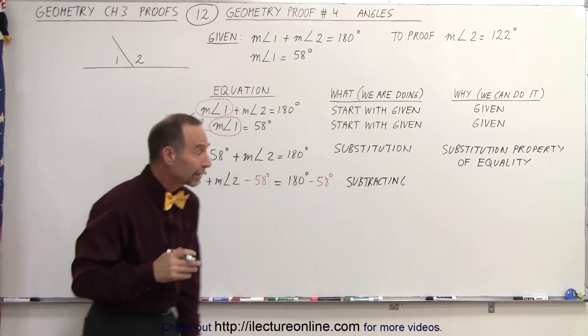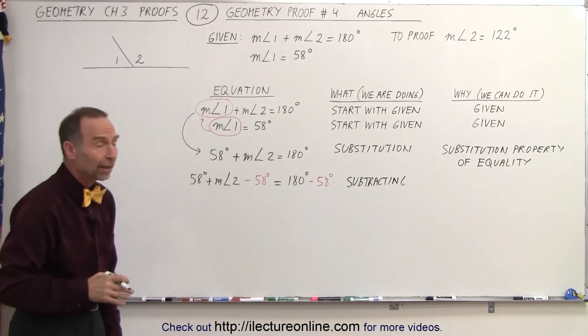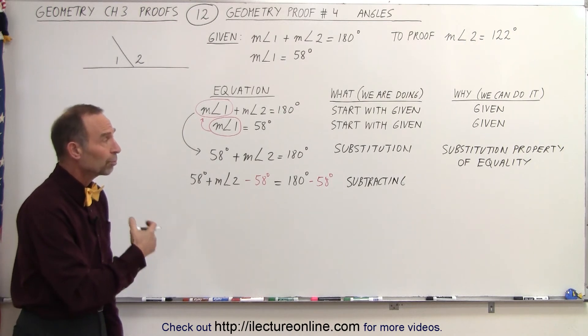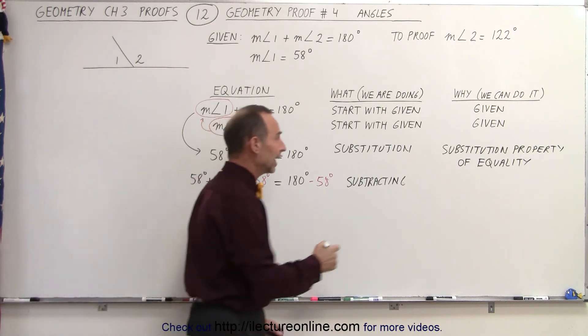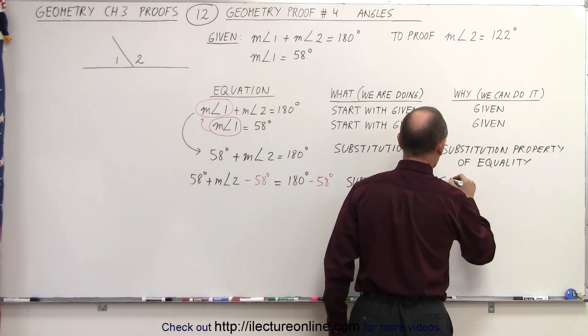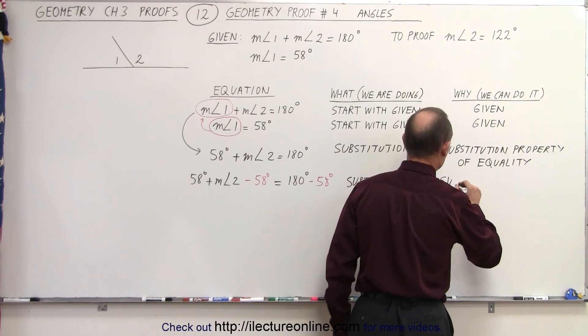Now why can I do that? Why can I subtract 58 degrees from both sides? Well, they call that the subtraction property of equality. If we do exactly the same thing on both sides, we don't change anything. So we can say this is the subtraction property of equality.